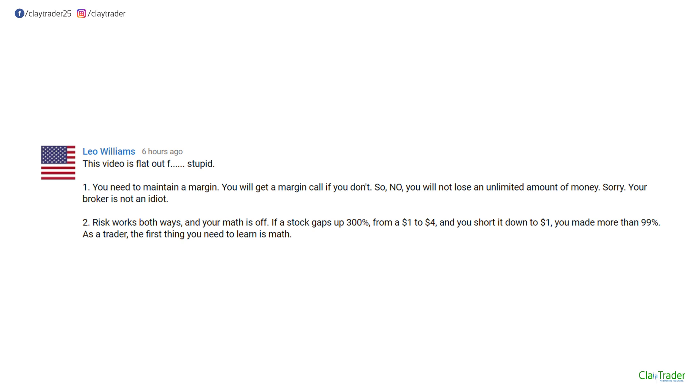Leo says this video is flat out effing stupid. Number two, risk works both ways and your math is off. If a stock gaps up 300% from $1 to $4 and you short it down to $1, you made more than 99%. As a trader, the first thing you need to learn is math.